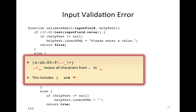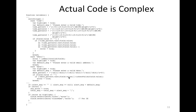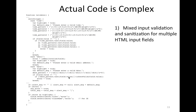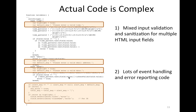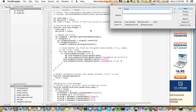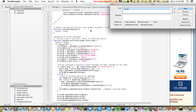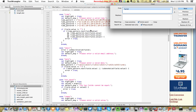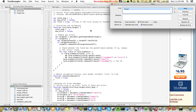The question is how can we detect these errors and correct them automatically. The problem is that the actual code is complex. Why? Because the actual code mixes the input validation and sanitization for multiple HTML input fields. In our case, we want to validate each input field alone. Also, there are lots of event handling and error reporting code, which will complicate our analysis without benefiting it. Let's take a look at the actual example, which was taken from Google through automatic crawling. It contains lots of code, and it's very hard to verify the whole example.